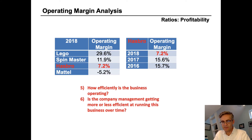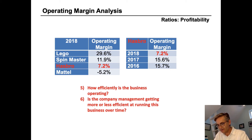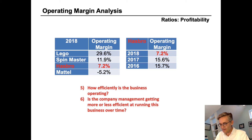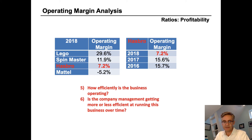Operating margin is often used to compare companies within the same industry that have different amounts of debt, because it's before tax and interest, allowing us to focus just on operations without respect to how a business is capitalized or taxed. In general, investors and lenders like to see higher operating margins, and increasing operating margins are preferred to decreasing ones. Operating margin should be positive for a healthy company. If you're looking at a company like Mattel with a negative operating margin, you need to look very carefully — a negative operating margin could exist in a new company with high startup costs, but this is an unsustainable situation that would need to be urgently addressed by management.